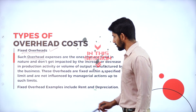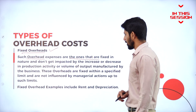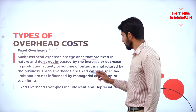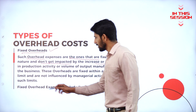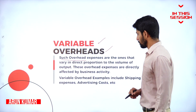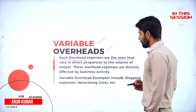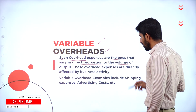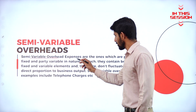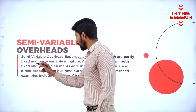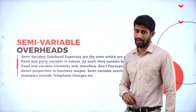Such overhead expenses are the ones that are fixed in nature and don't get impacted by increase or decrease in production activities. Such overhead expenses are the ones that vary in direct proportion to the volume of output. Semi-variable overhead expenses are ones which are partly fixed and partly variable in nature.